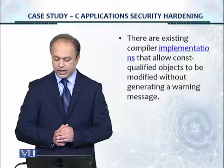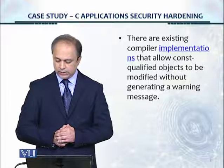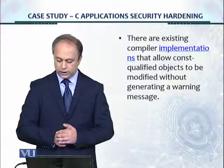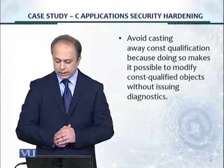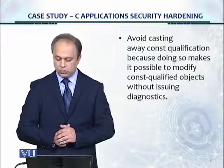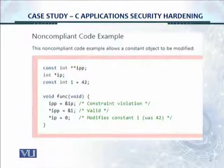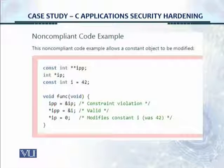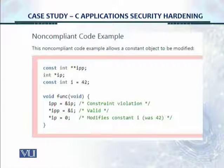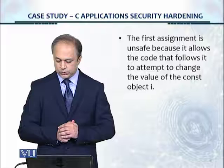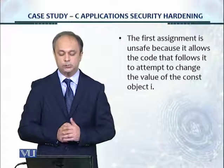Here is an example of one of the control sets. It states that there are existing compiler implementations that allow const-qualified objects to be modified without generating a warning message. The control advises: avoid casting away const qualification, because doing so makes it possible to modify const-qualified objects without issuing diagnostics. A non-compliant code example is provided, showing that the first assignment is unsafe because it allows subsequent code to attempt to change the value of the const object i.